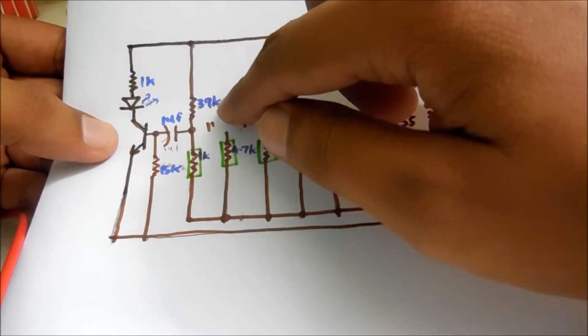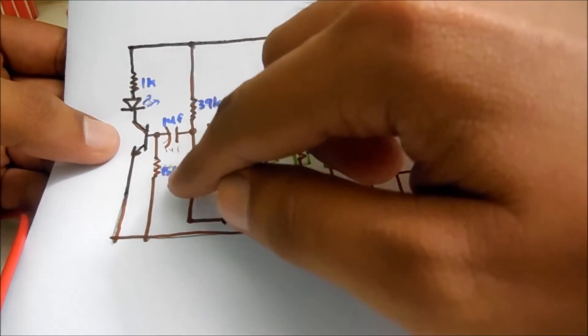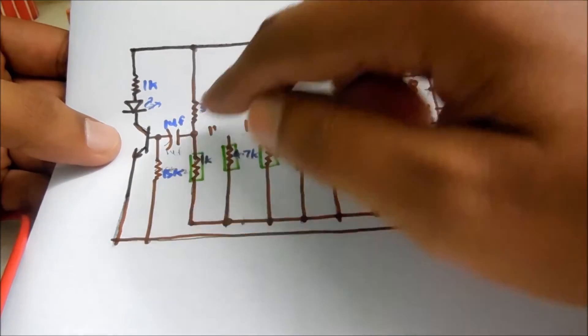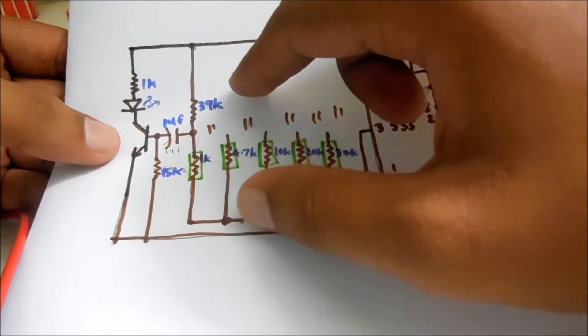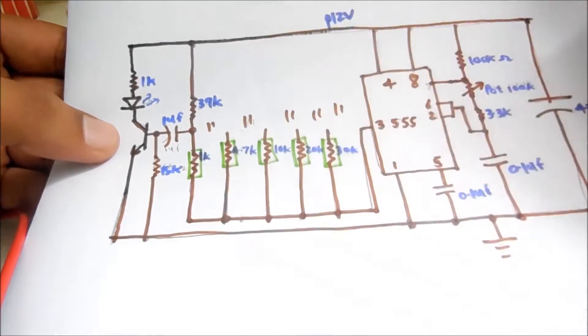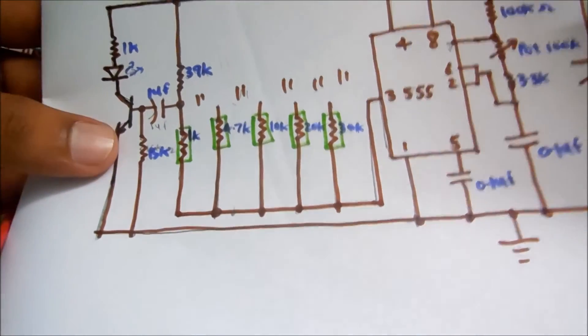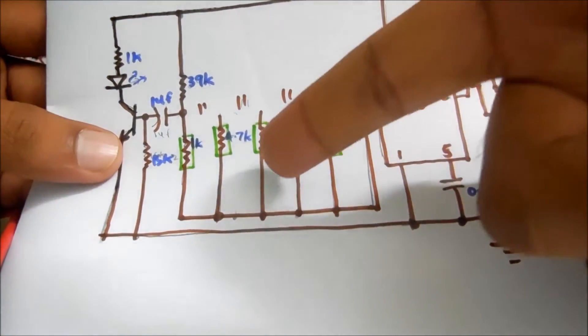But the difference is that we are using 39K and 1K. And in the next, there is the same circuit, but instead of this 1K, we are using 4.7K. And for the next circuit, we are using 10K.